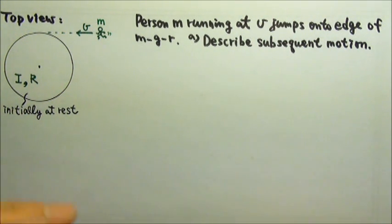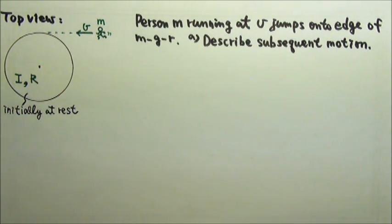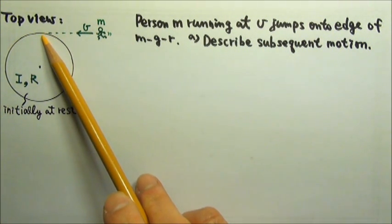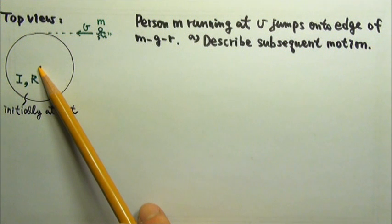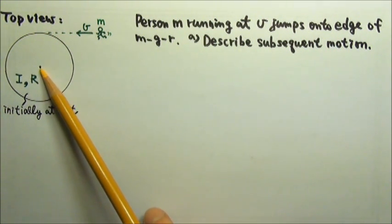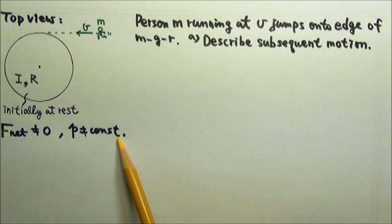This is a collision problem. The person collides with the merry-go-round and they stick together. However, we cannot use conservation of momentum for this problem, because there is a fixed axle. When the person jumps onto and lands on the merry-go-round, there would be a jolt on the axle. Because of this extra force from the jolt, the net force on the person-merry-go-round system is not zero. Therefore, there is no momentum conservation.